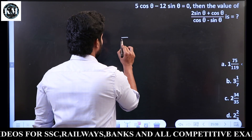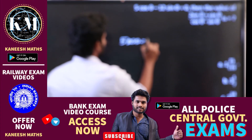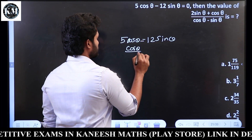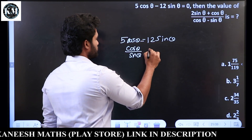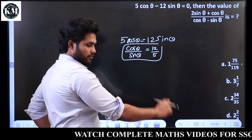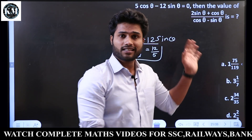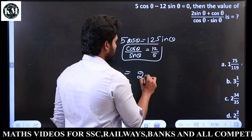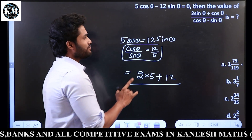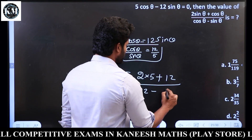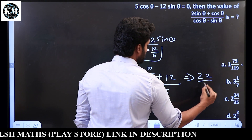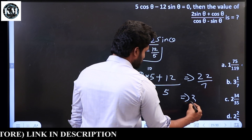Next: 5 cos theta is equal to 12 sin theta. So cos theta by sin theta equals 12 by 5. In the ratio, sin theta value is 5 and cos theta value is 12 — direct substitution. So 2 sin gives 2 into 5 equals 10; cos gives 12. LCM is 21, balance is 1.